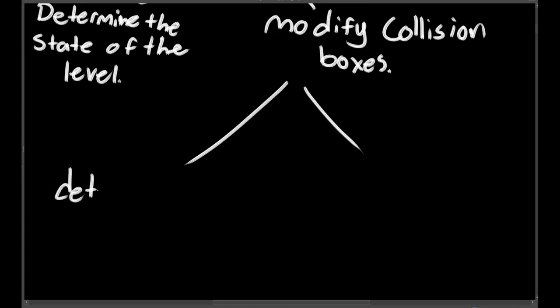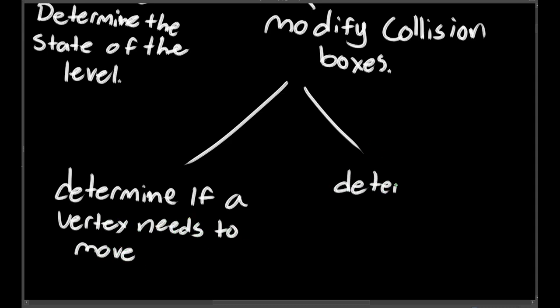Some of the smallest parts could be things like determine if a vertex of the collision box is in the wrong version of the level and needs to move, and determine which direction the vertex needs to move and by how much. Both of these pieces could be implemented in a few lines of code, so they should be simple enough. If the parts are closely related, you can sometimes solve them together if the combination is still a small enough problem.